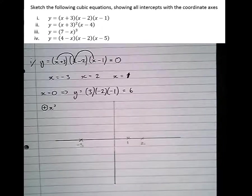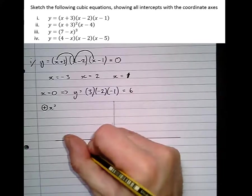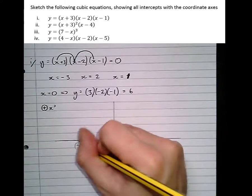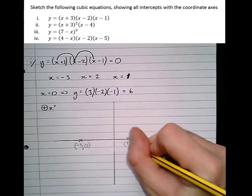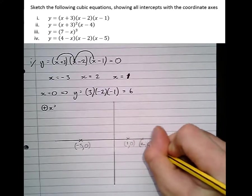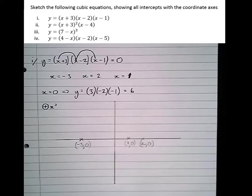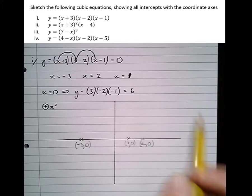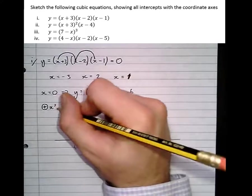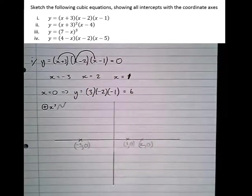But notice the question asks, showing all the intercepts with the coordinate axes, I'm going to give them as coordinates. So that's minus three, zero, one, zero, and two, zero. Now I'm not actually going to draw the y-intercept on yet. You'll see why in just a second. So we've got a positive x-cube graph. That means the shape's going to be roughly like that. So let's get drawing this.